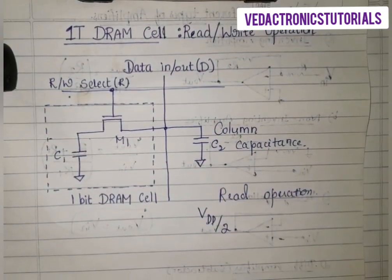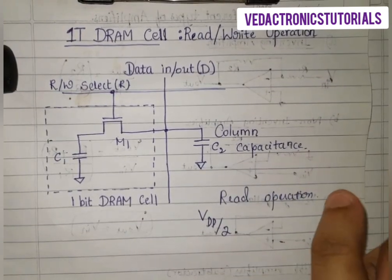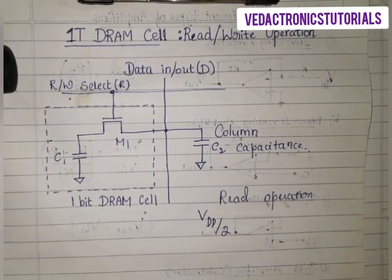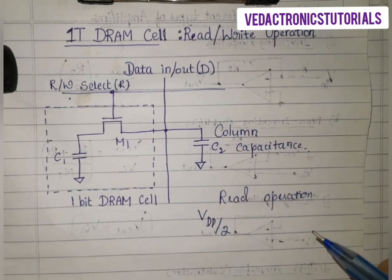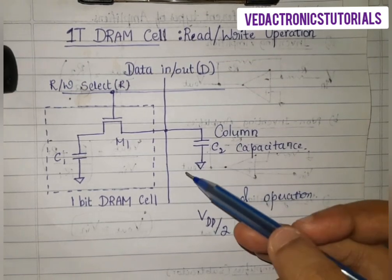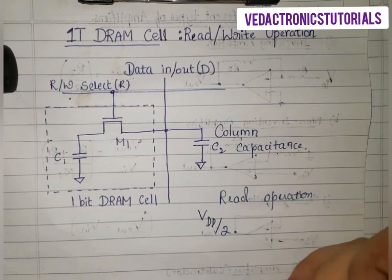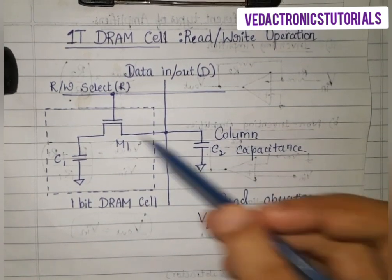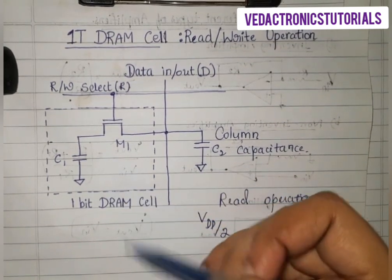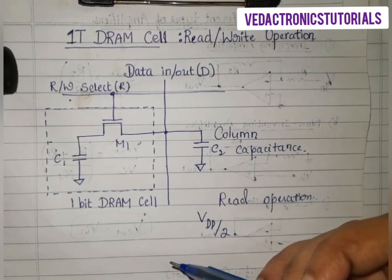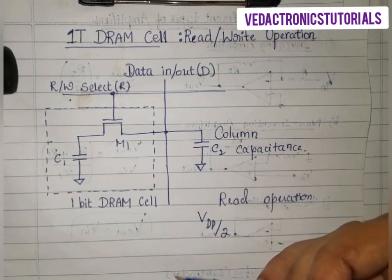Depending on the amount of stored charge on C1, the column voltage either increases or decreases slightly. If the stored bit is 1 (VDD), the resulting voltage after charge sharing will be more than VDD/2, hence interpreted by the sense amplifier as logic 1.